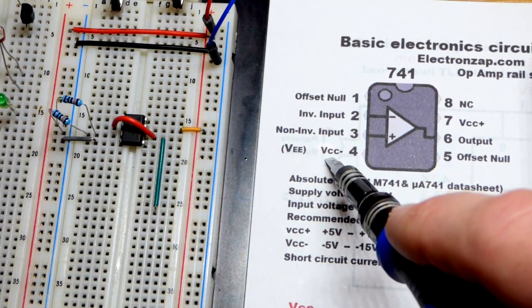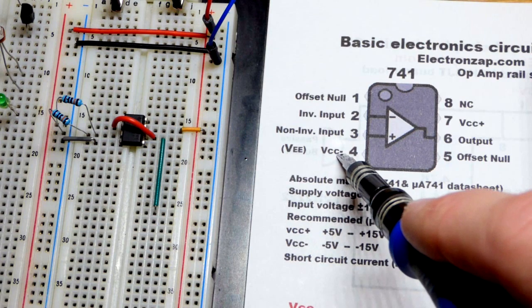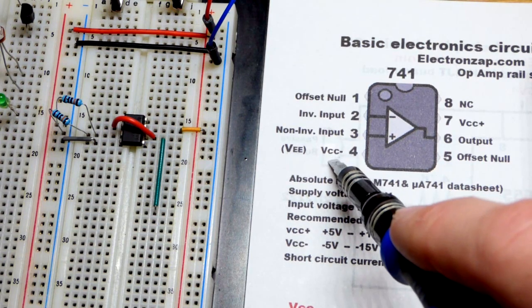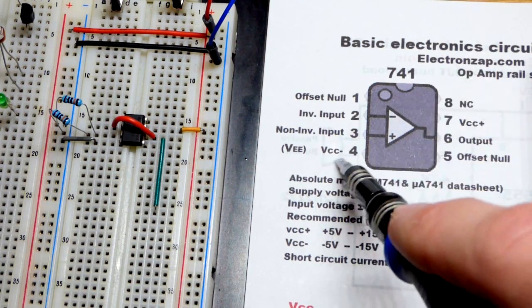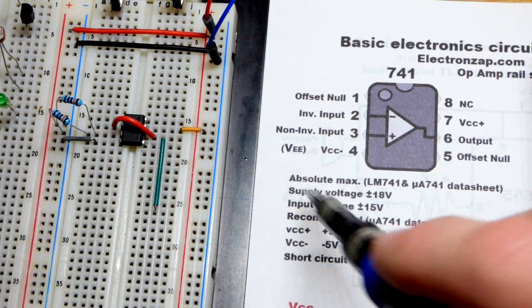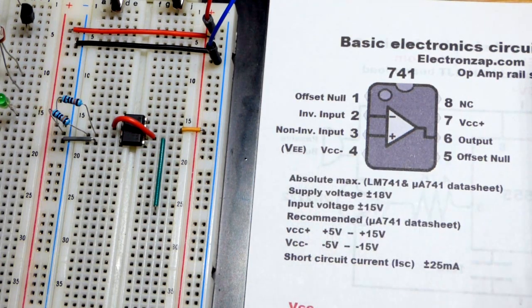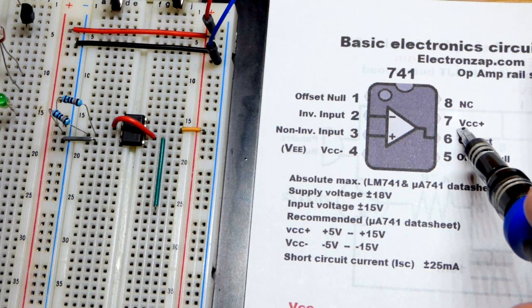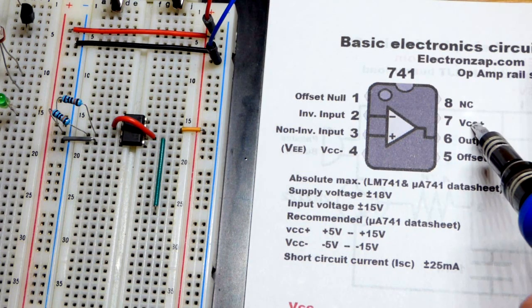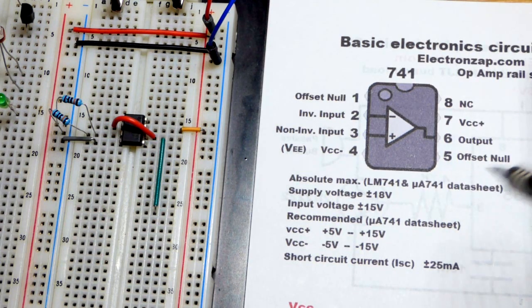You may see VEE because the negative side of the power supply is normally where an NPN bipolar junction transistor emitter connects. But some people might just write VCC negative. That's actually what one of the data sheets wrote. The other data sheet wrote VEE.